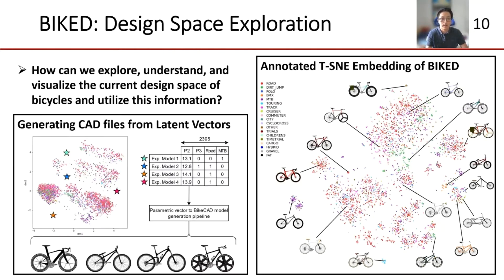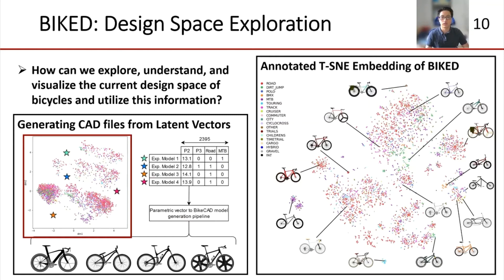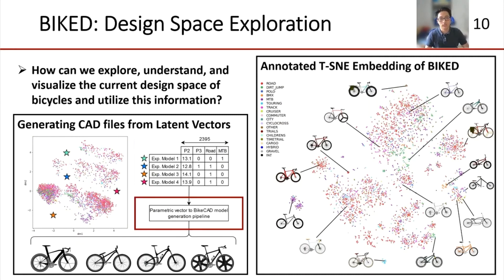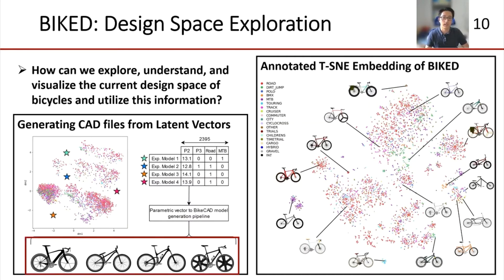Some reversible embeddings, like principal component analysis, can also be used in a generative process. We developed a method to reinsert parametric design vectors into BikeCAD files, which can then be opened in BikeCAD to export images or 3D models. Combined with reversible embeddings, this pipeline enables a unique machine-assisted design process in which designers can create an embedding of existing designs, then sample points of interest in that embedding — perhaps from sparse regions where there may be novel design opportunities. They can then convert the embedding vectors to the original parameter space, use the generative pipeline to convert these synthesized parameter space vectors into CAD models, and then evaluate, refine, and export images and 3D models.